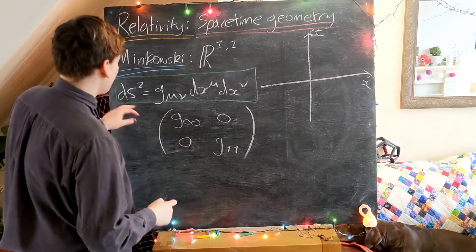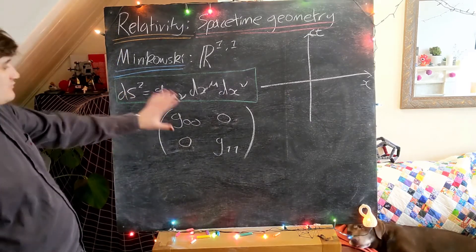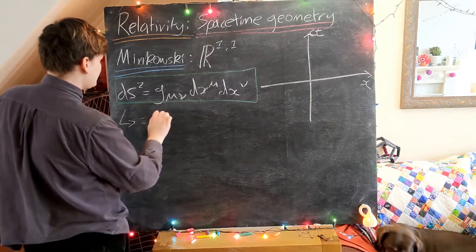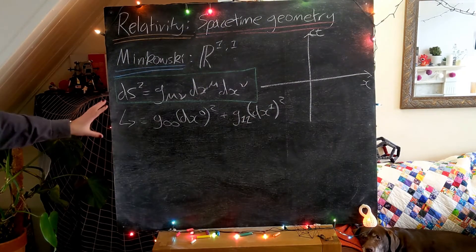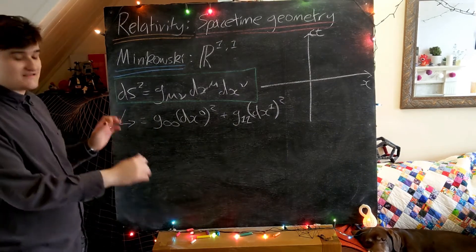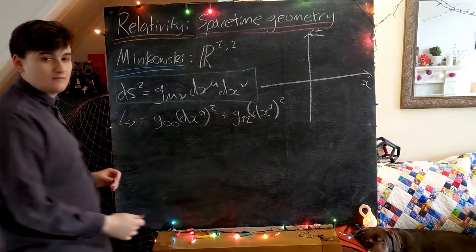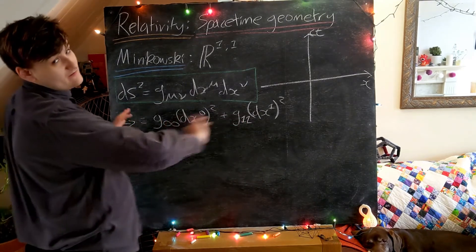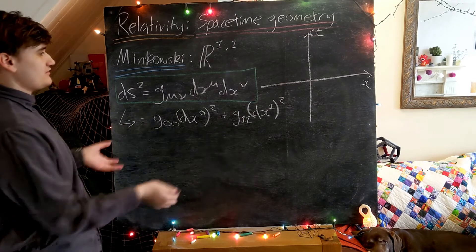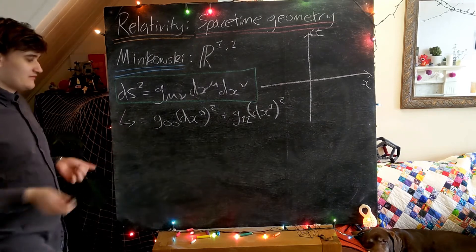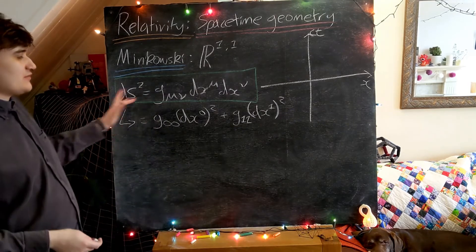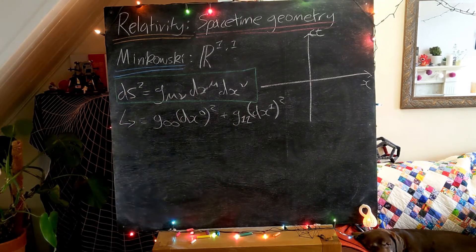We just have two diagonal components. When we perform the expansion, the line element takes this simple form. Hopefully this is familiar from the last video — this is just how we define a line element, completely controlled by the metric coefficients. As we saw, in Euclidean geometry the metric coefficients are very simple: G00 and G11 are both equal to one. So the line element just becomes the familiar Pythagorean theorem.